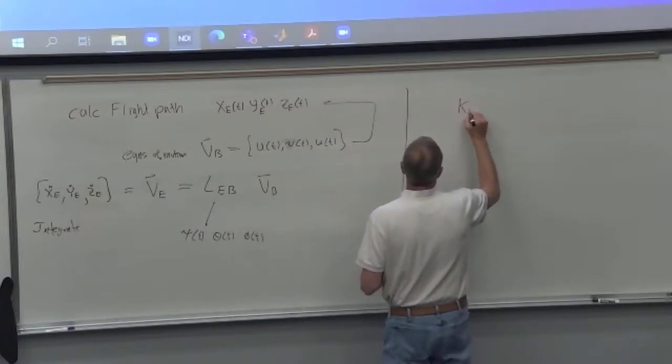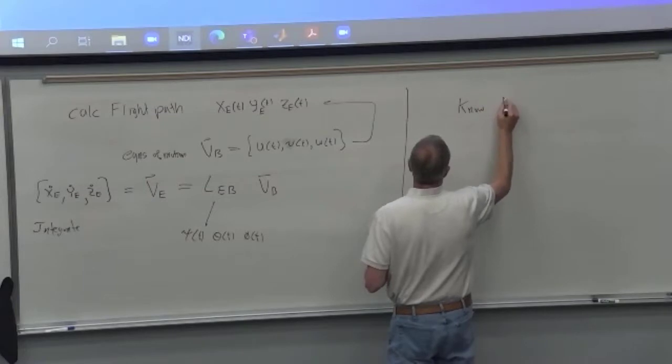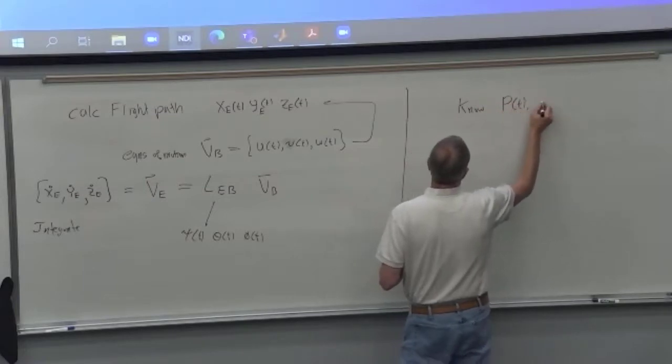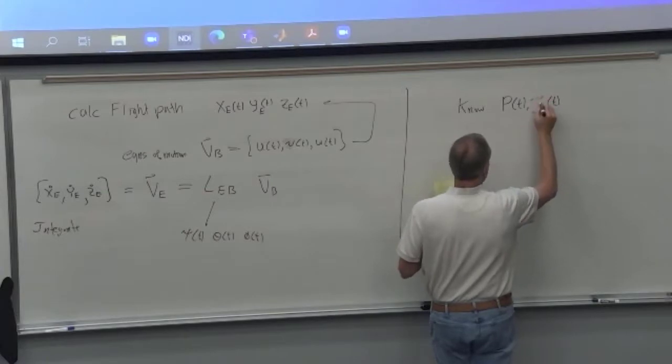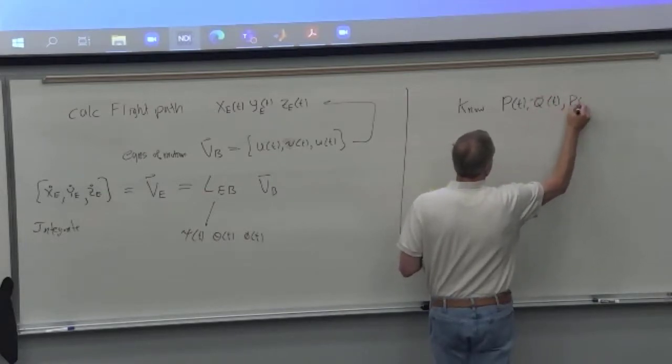So where do we get those? Usually in the body-fixed axis system, we know the roll rate, the pitch rate, and the yaw rate r.